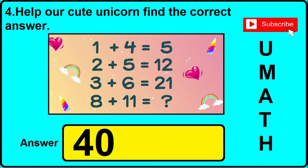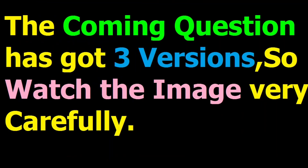In version 3 of question 4: 1 plus 4 equals 5, 2 plus 5 equals 12, 3 plus 6 equals 21, then 8 plus 11 equals what — the correct answer is 4040. Question number 5 has got 3 different versions or types, so you need to watch the image and click the option I will be showing here in different versions.